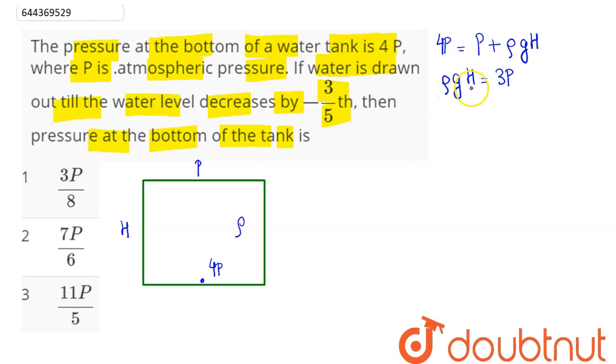Now it says, if water level in this water tank decreases by three-fifths, we can see here now water level decreases by three-fifths in the same tank.